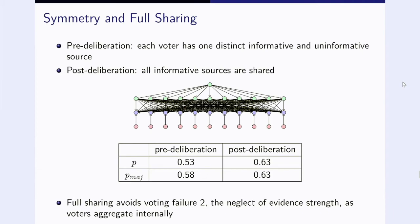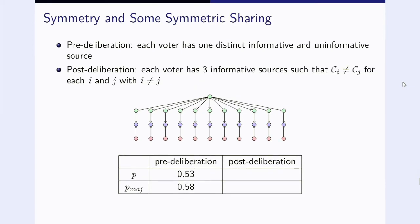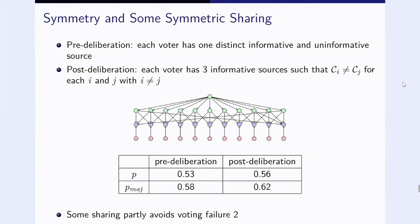Then it looks like this. What you see is that individual competence goes up and group competence goes up. And because every single individual knows just as much as there is to know, individual competence just is the group competence. Both is 0.63 in this example. What we can see here is that the full sharing avoids the voting failure two, the neglect of evidence strength, as now voters have a chance to aggregate internally. Before they turn their source into a vote, they can take all the sources together. The information loss is avoided, so they're doing much better here. You could do the same with less symmetric sharing. Same setting from here to maybe just three sources for every voter and you get the same effect, just a little bit weaker. Here the individual competence doesn't go up quite as much to 0.56, but the majority competence, the group competence goes up almost to the ideal situation, 0.62. So some of the sharing still at least partly avoids voting failure two.